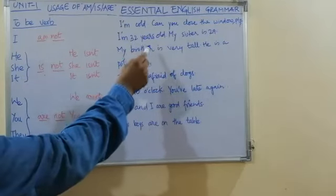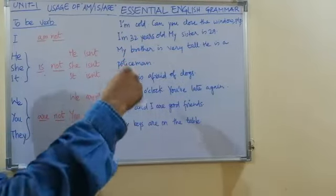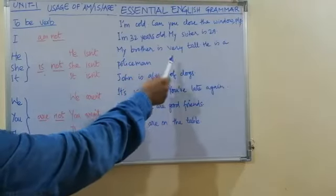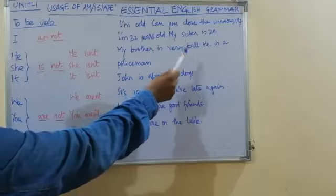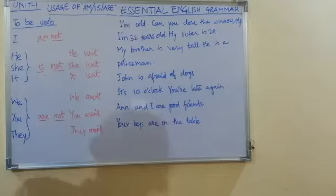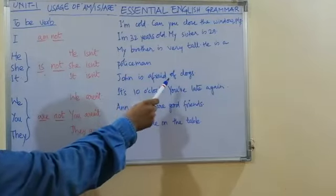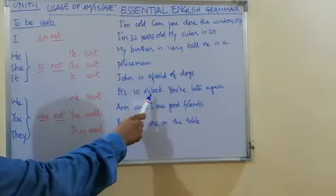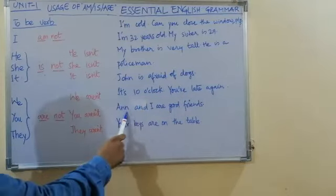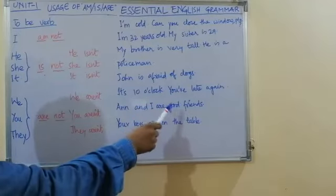When someone asks you how old are you, you can say I am 34 years old, or I am 34. My brother is very tall — mera bhai bahut lamba hai. He is a policeman — woh ek policeman hai. John is afraid of dogs — John ko kutton se dar lagta hai. It's 10 o'clock — abhi das baj rahe hain. You are late again — aap phir se late hain. Ann and I are good friends — Ann aur main achche dost hain.